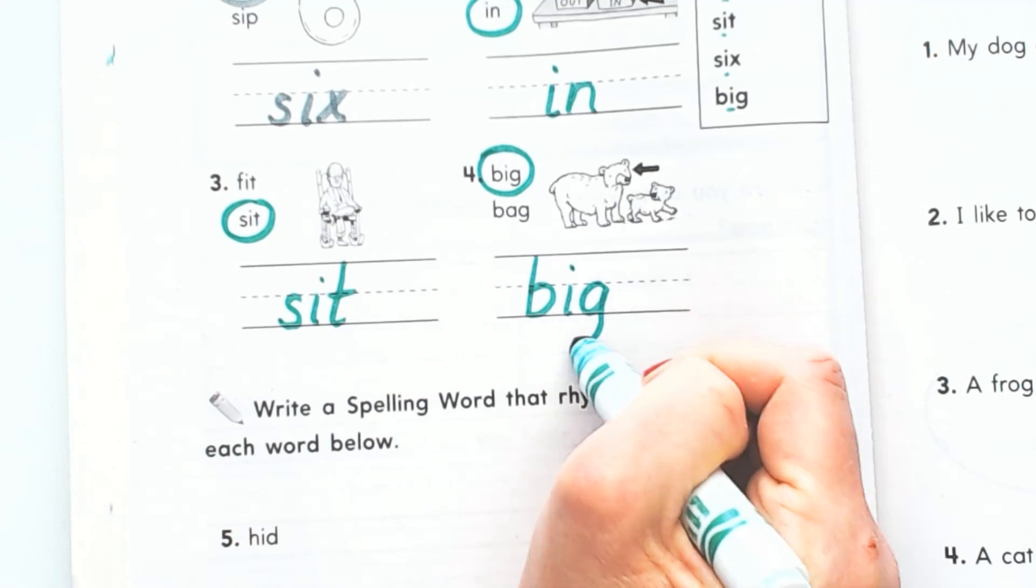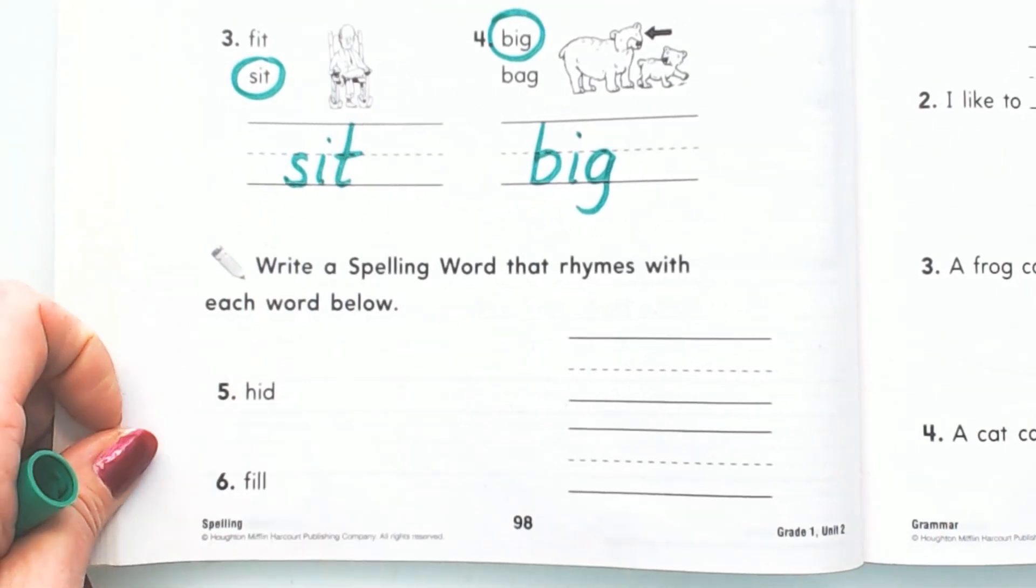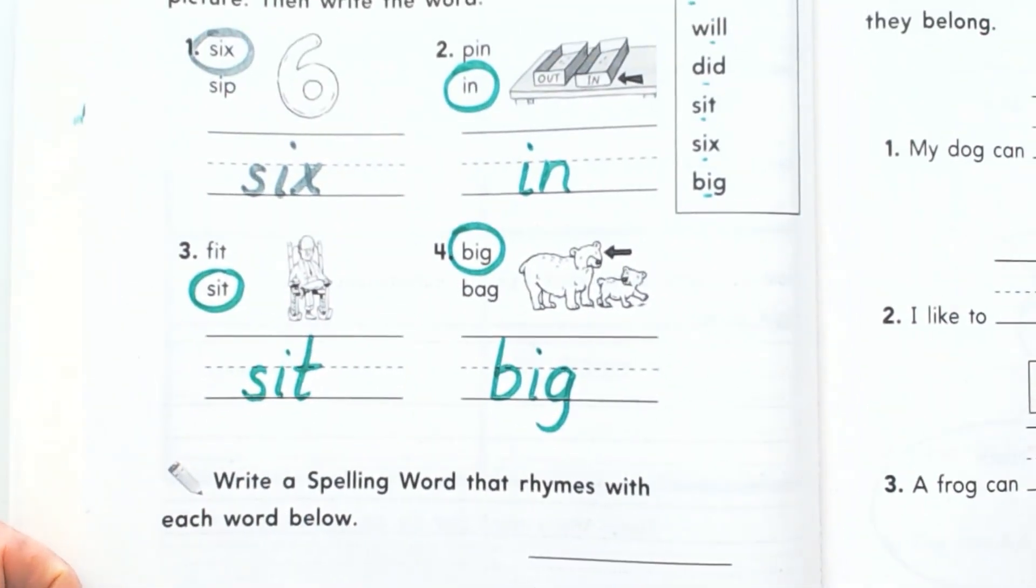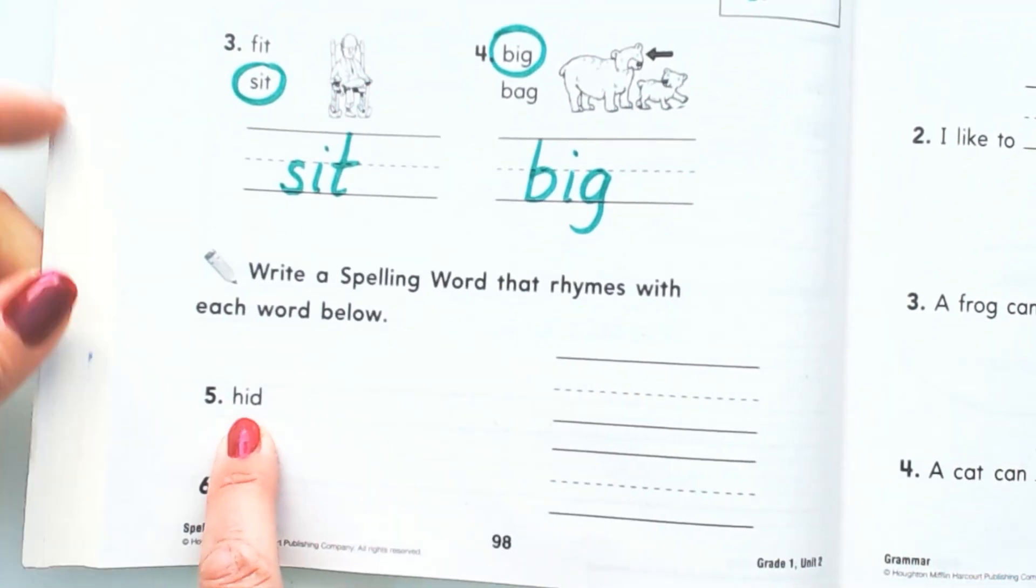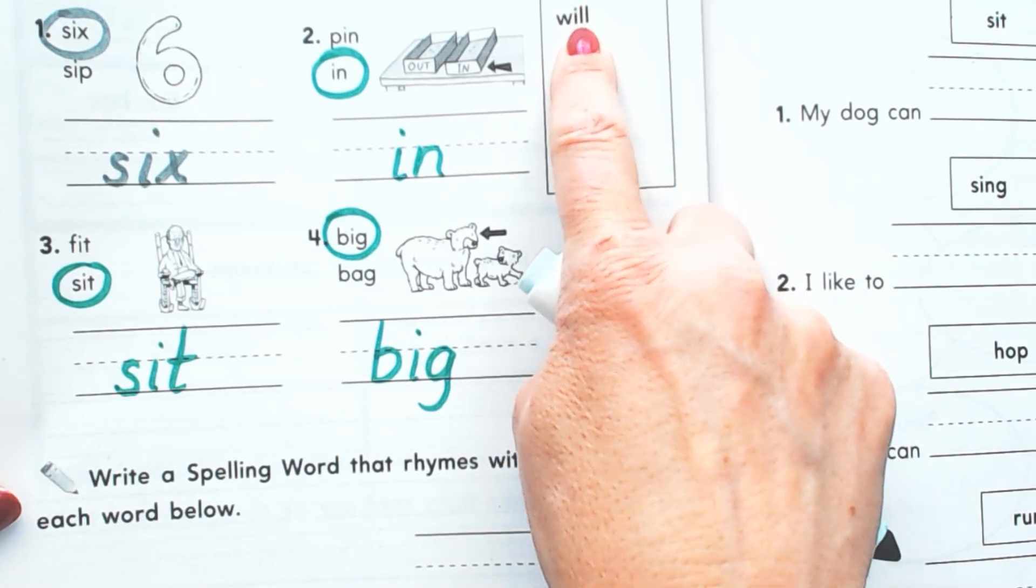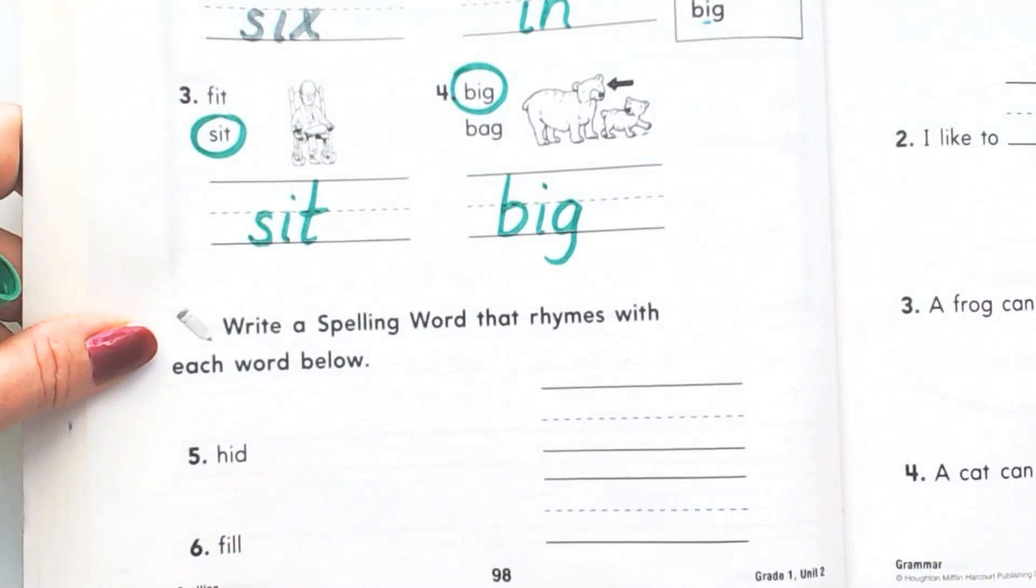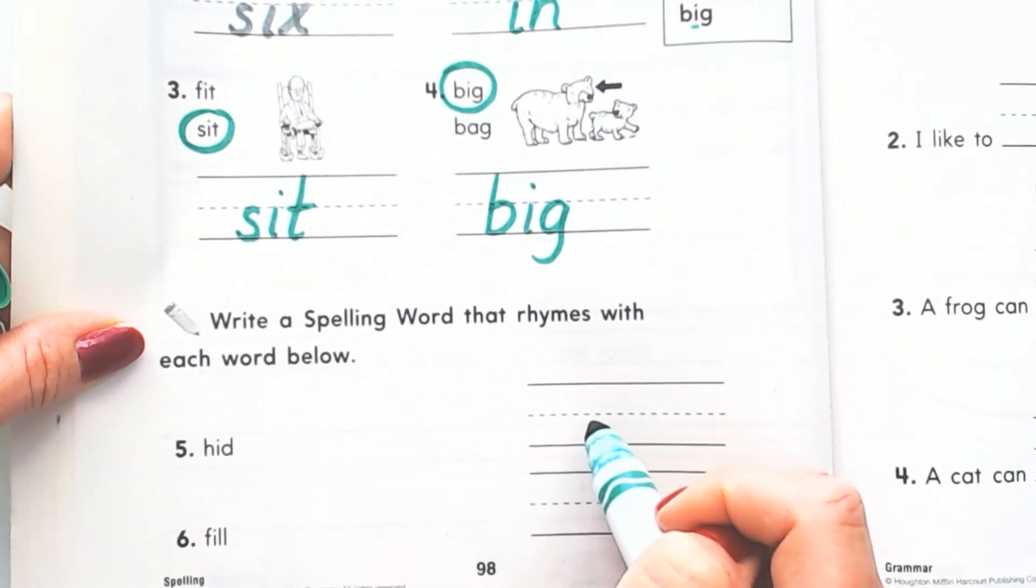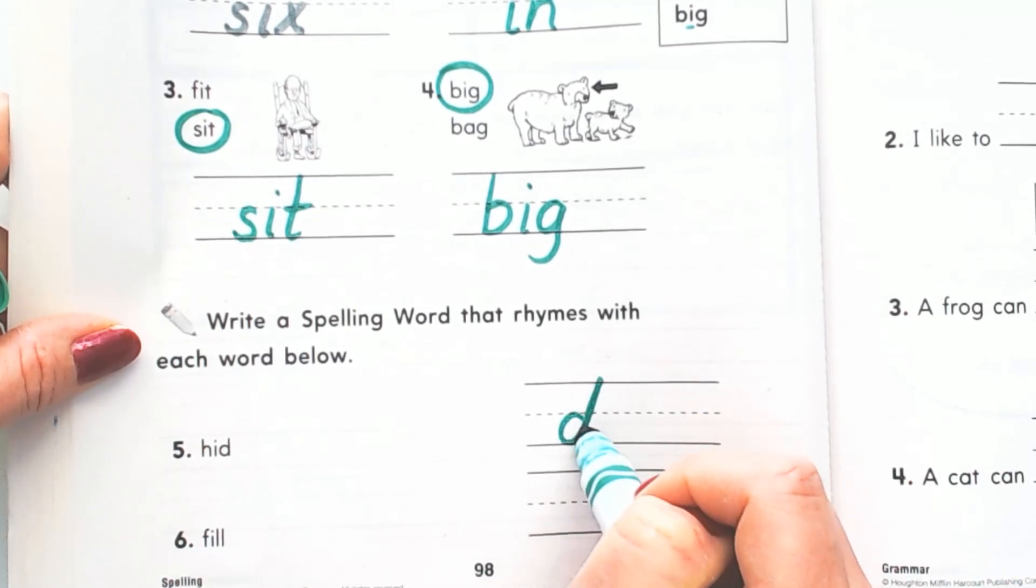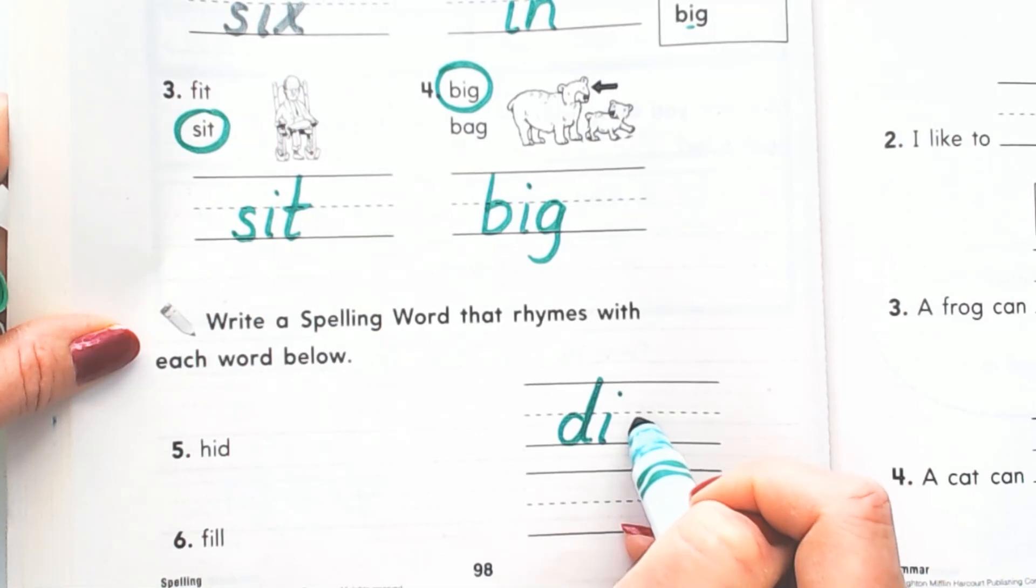Now we're going to write our spelling words that rhyme with each of these words. So this one says 'hid,' and I'm going to look for an I-D at the end of one of these words to see which one rhymes. That's I-D right here. 'Did.' Did and hid rhyme. D-I-D. Did.